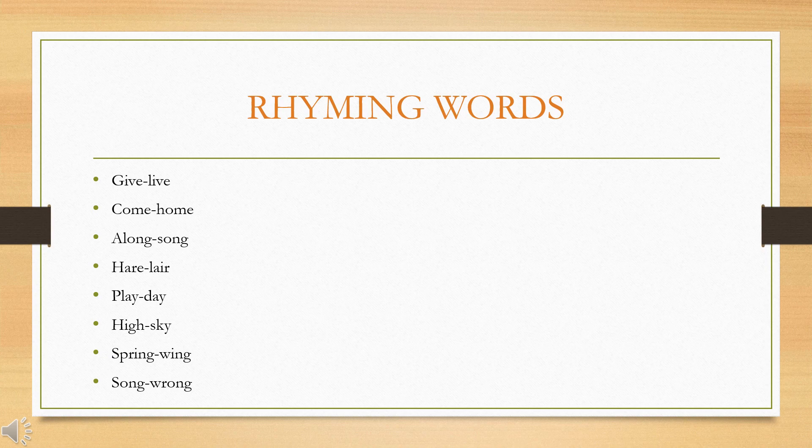The rhyming words from the poem are: give/live, come/home, along/song, hare/lair, play/day, high/sky, spring/wing, and song/wrong. When you go through the poem in your textbook, you will find these words at the end of each line. Go through it and understand it.